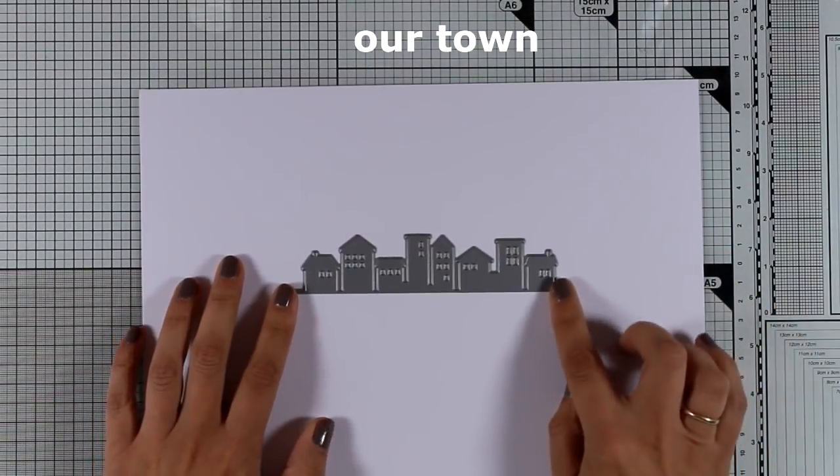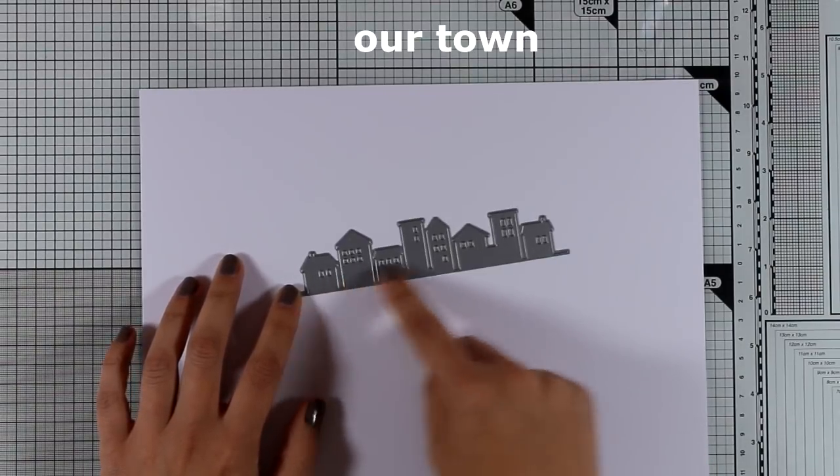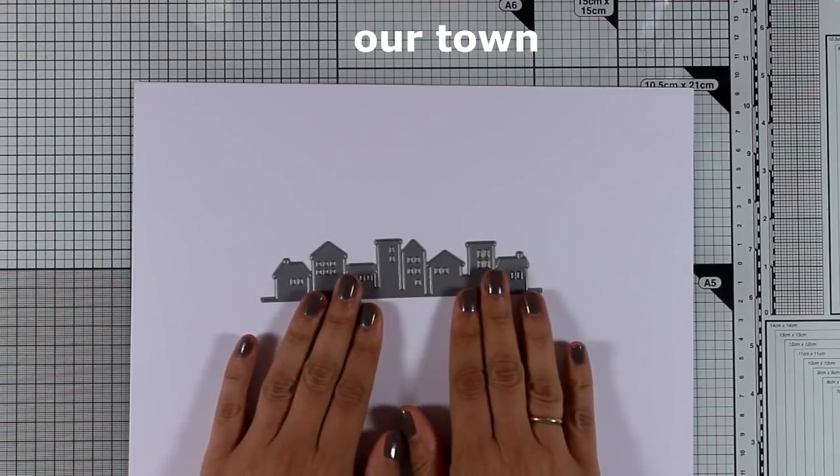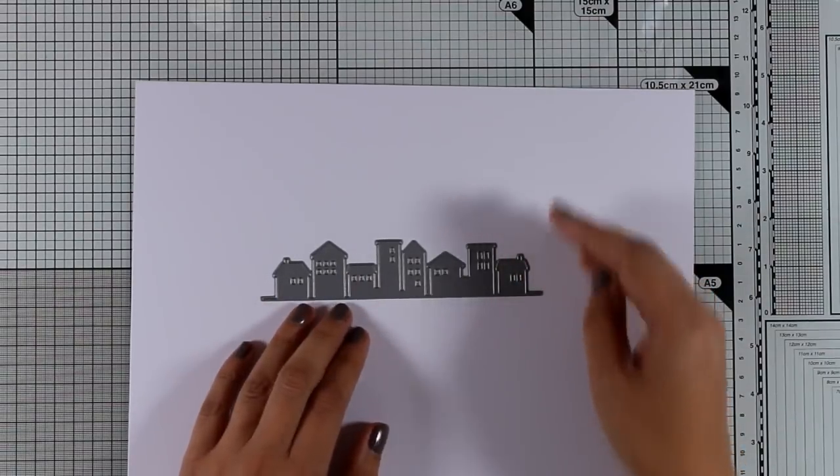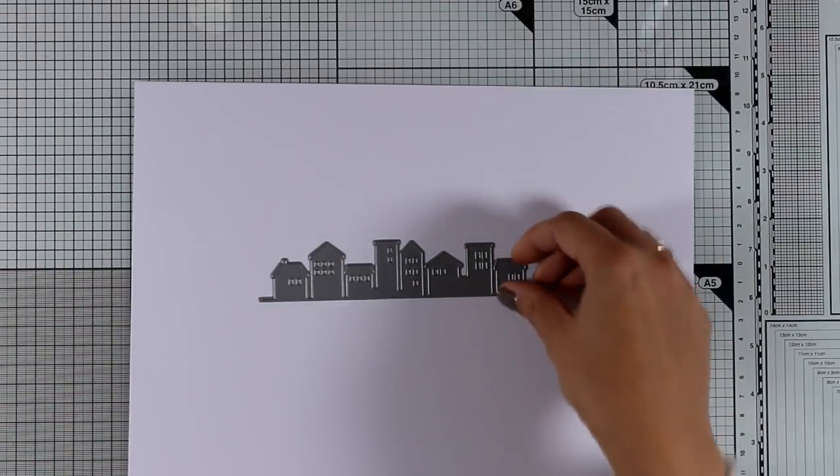Now here is a die that has just been released that I absolutely love. This is called Our Town and it gives you that cityscape border. I just absolutely love this because I love creating little scenes on my cards and I can see so many different ways to use this.